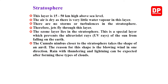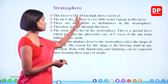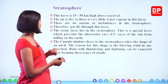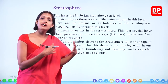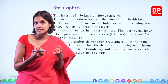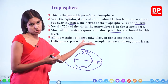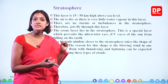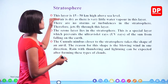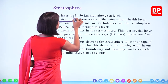The second layer away from the earth is known as the stratosphere. This layer is 15 to 50 kilometers high above sea level. The air is dry because there is very little water vapor in this layer — unlike the troposphere where most water vapor is present, the stratosphere has very little, so air is dry here.